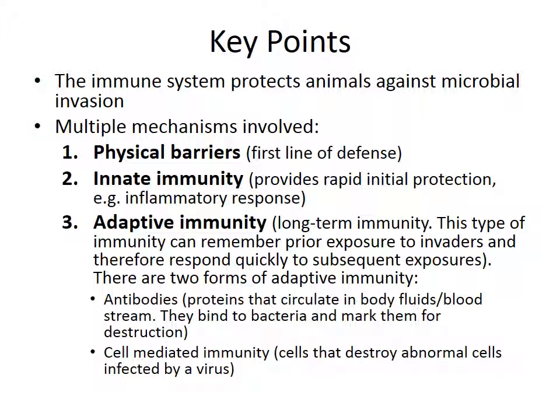There are lots of mechanisms involved — three primarily. One of them is physical barriers, our first line of defense against invading microbes. Number two is innate immunity, a rapid initial protection against invaders. The most significant example is the inflammatory response. Say you're bitten by a mosquito and that spot turns red and swells — that's the innate immune system's inflammatory response.